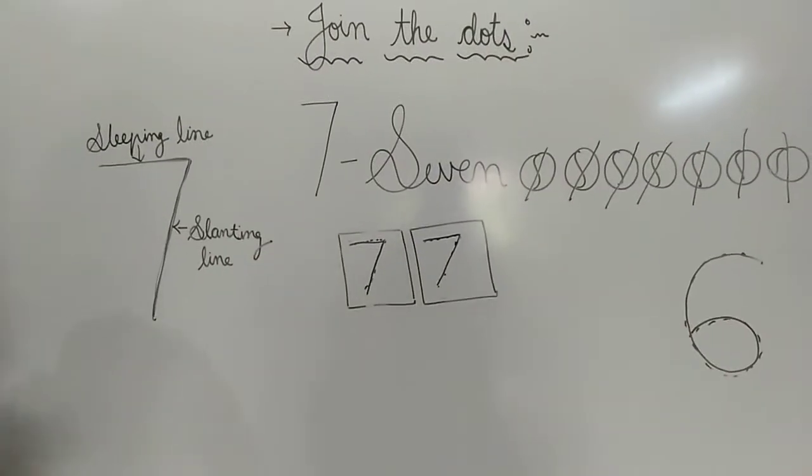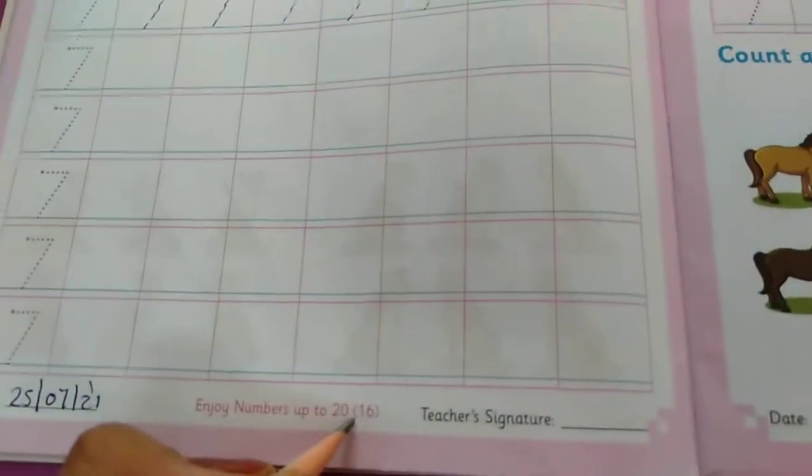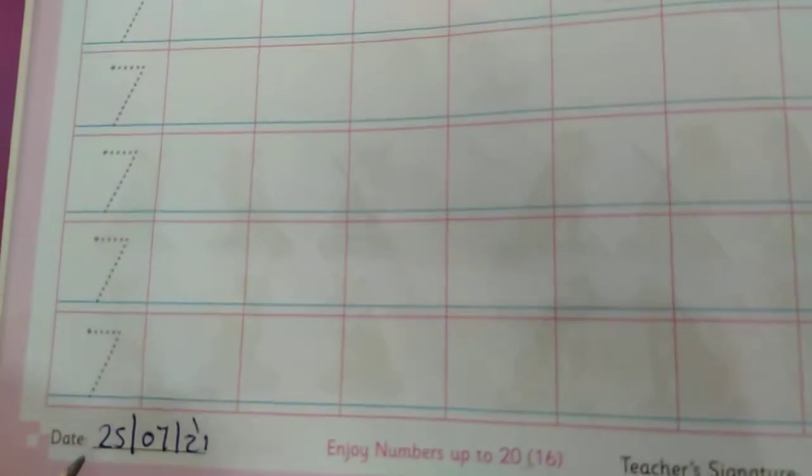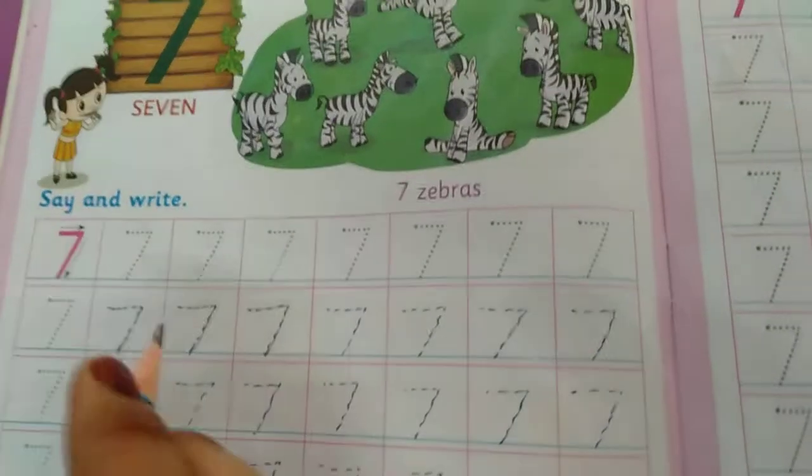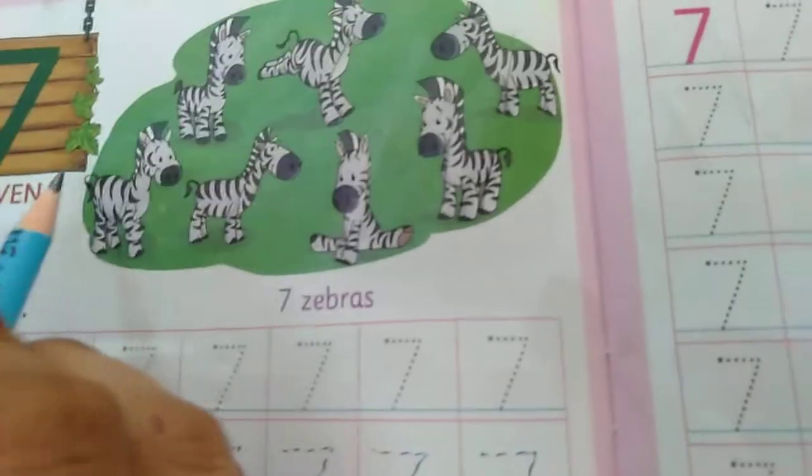Now we will write in our math notebook. Enjoy numbers up to 20, page number 16. Number 7. Write down today's date: 25/7/21. Parents aapko ye date likhni hai. How many zebras? Kitne zebras hai yahan per?